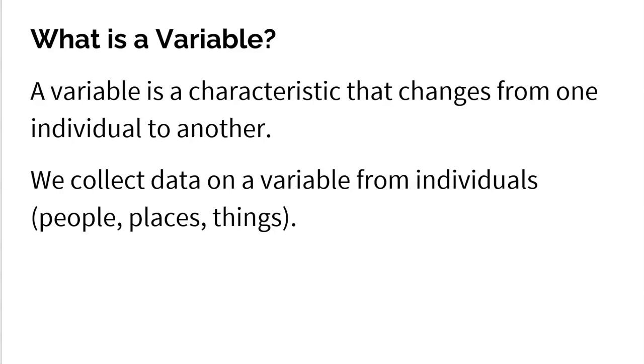Just think of an object, a chair. A variable is a characteristic that changes from one chair to another. The color, the size, the width, the weight, where it was manufactured. Does it have padding? Does it not? Is it made of plastic? Is it made of wood? All those are variables.